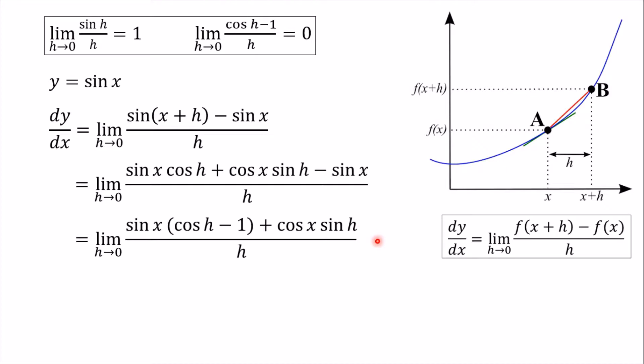But remember that I did say that we were going to need these rules we found at the top. So what I'm going to do is just write this in a slightly different way. I'm going to split these into two fractions and I'm going to take the sine x and the cosine x out the front of each one. So we've got sin x into cos h minus one all over h. So that's that bit there. And then we've got the cosine x which I've taken out and then the sin h over h there. So just make sure you, I mean, pause the video, just make sure you're happy that those two things are the same.